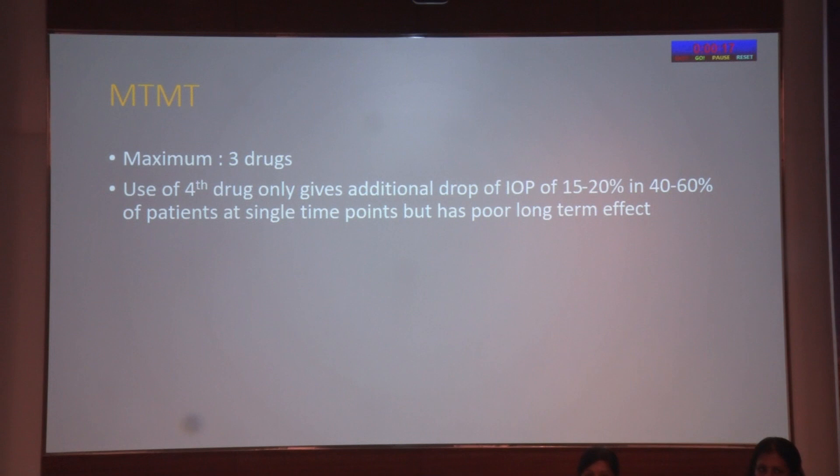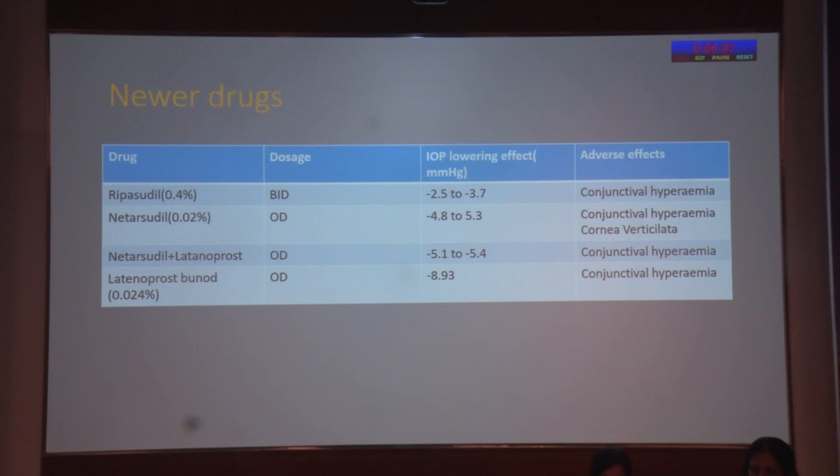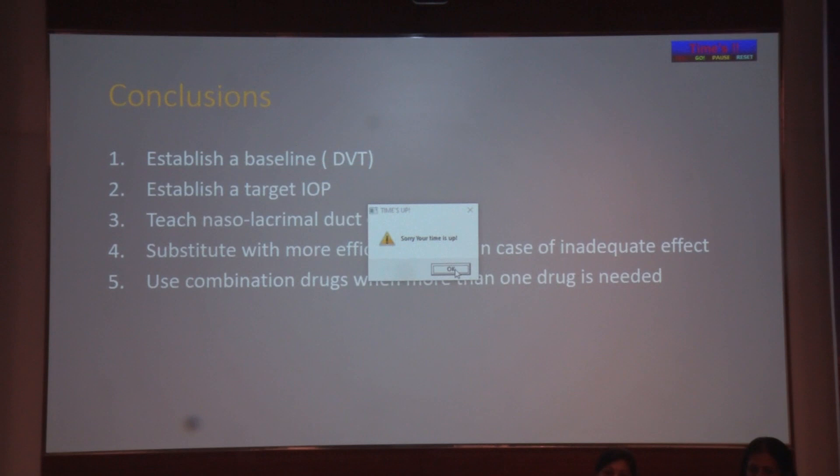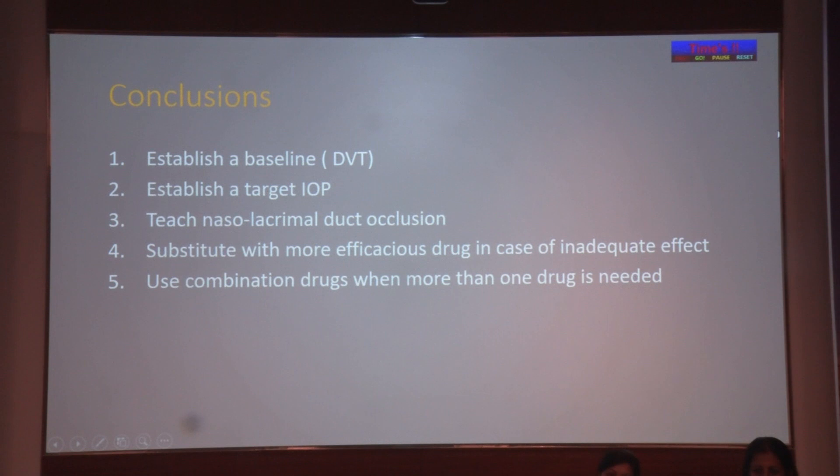Newer drugs in our armamentarium include ROCK inhibitors, which increase trabecular outflow, and combinations of ROCK inhibitors with latanoprost — though conjunctival hyperemia is a problem with all of them. In conclusion: establish a baseline, establish a target IOP, teach nasolacrimal duct occlusion to prevent side effects, substitute with more efficacious drugs for inadequate effect, and use combination drugs when more than one drug is needed. Thank you.